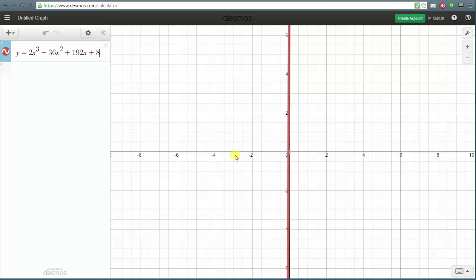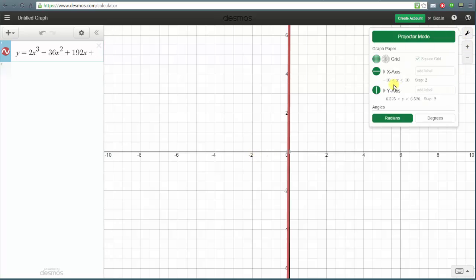The function is now graphed on the given window but it's obvious we need to adjust the window. We can do this two ways. We can click on the graph settings and adjust the axis manually or we can use the plus and minus sign here to zoom in or zoom out. Let's zoom out first and then we'll come back and adjust the axis manually.